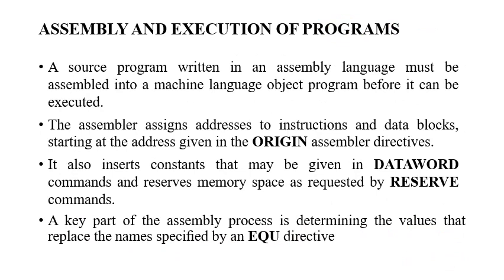In this slide, we will discuss assembly program execution. The source program written in assembly language is converted into machine language, that is, the object program, which will be executed by the processor. It is important for the processor to know from where to fetch the first instruction and what data to fetch from a particular location. In order to perform this, the assembler assigns the initial address where it stores the first instruction, and this is specified by the ORIGIN assembler directive.